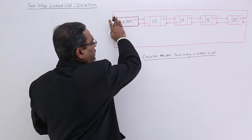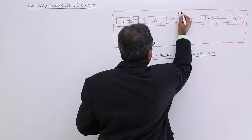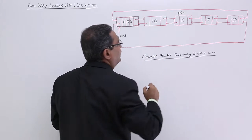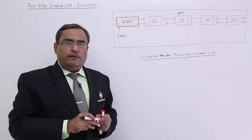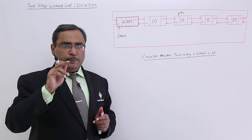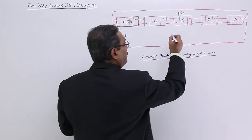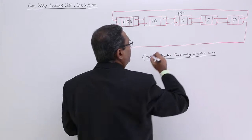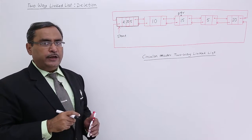In this way, I shall search. My pointer will be here because this particular node is having the info 15. This PTR variable will be pointing to this particular node. This PTR has to be deleted.